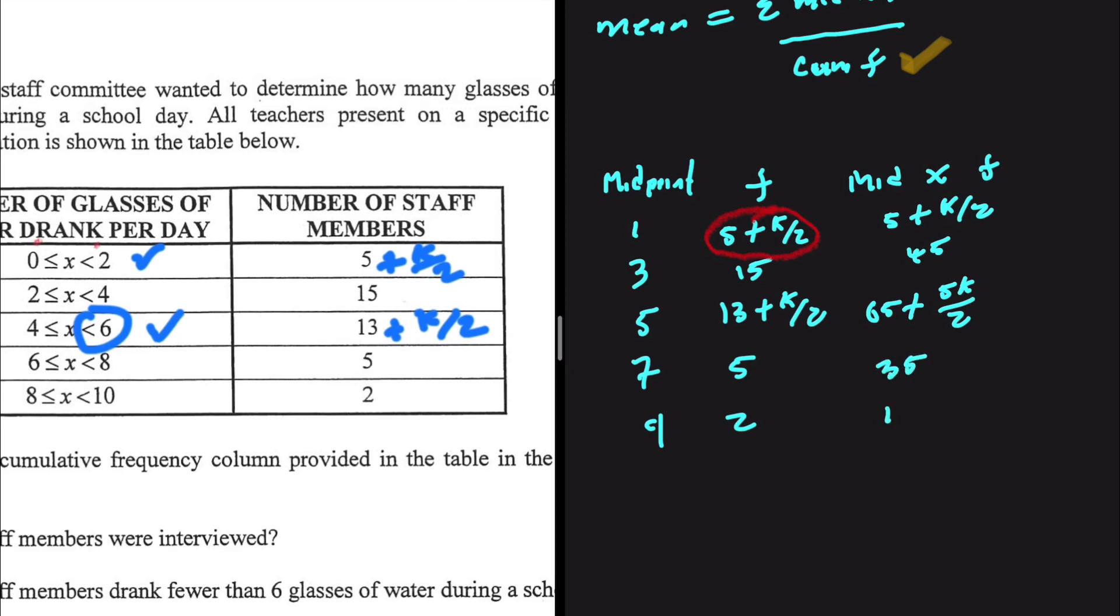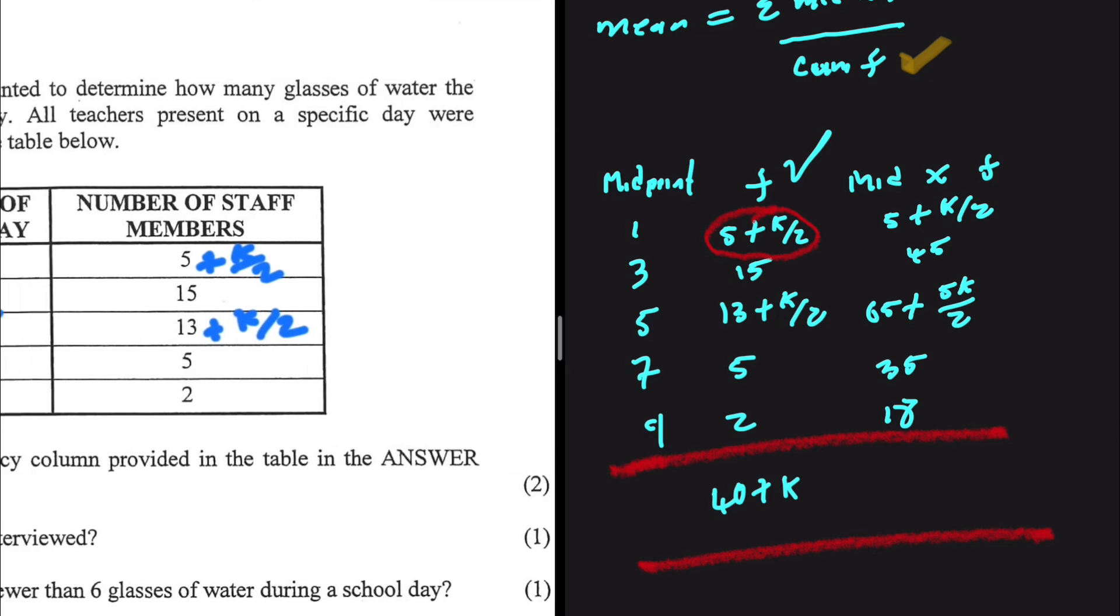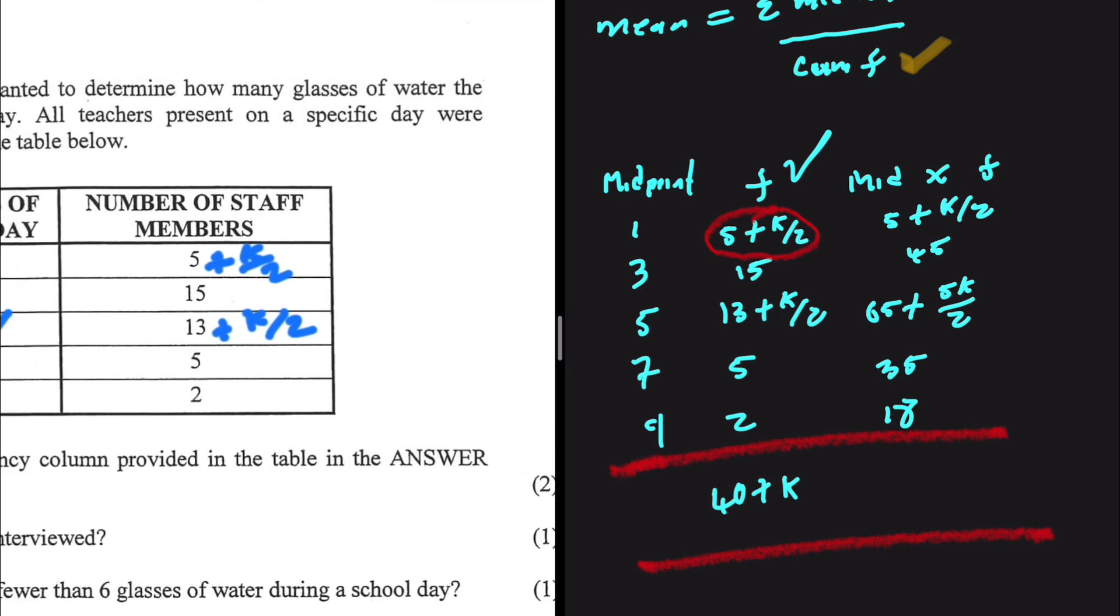And then the total. I have to find my totals now. The total for the frequency, I know that the cumulative frequency was 40 right, so now I'm gonna have 40 plus k right, for the k teachers that were absent. That is quite easy to see.